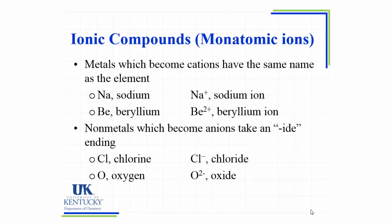Ionic compounds are fairly easy to name, particularly when we're dealing with our main group elements. Because we only have one option for the cation charge and one option for the anion charge, we don't have to worry about including any of that information in the name of the compound. We take the name of the atom that becomes a cation and simply add the ion ending on it.